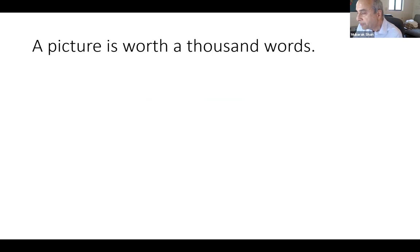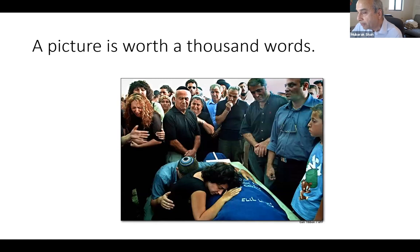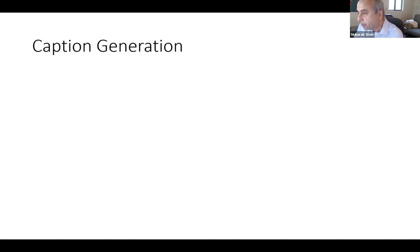As they say, a picture is worth a thousand words. When you humans look at a picture, you can see that people are grieving, there is a grave, and some bad event happened, some suicide bombing. You bring in a lot of knowledge and you can analyze this image. The challenge is how can a computer be able to do that?